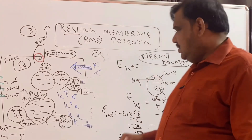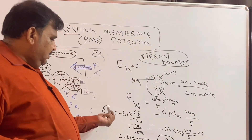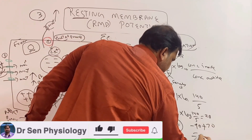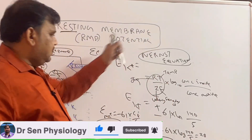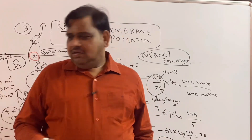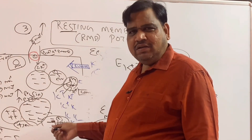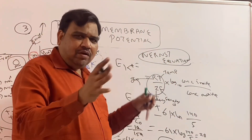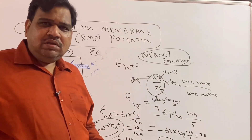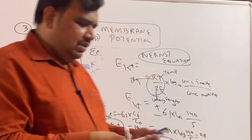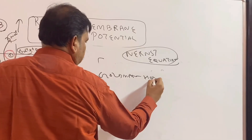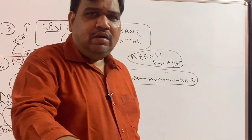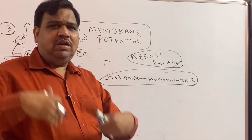Now comes a very important question. You might ask: if RMP equals the sum of sodium and potassium equilibrium potentials, then minus 90 plus 70 equals minus 20 — so I would expect RMP to be minus 20. But what we know is that the resting membrane potential of a neuron is minus 70. The reason is that potassium is much more permeable than sodium. So I cannot simply add sodium and potassium equilibrium potentials. I have to use a formula that includes the permeability of the cell membrane for each ion. Here comes another very important equation: the Goldman equation. The Nernst equation is for individual ions; the Goldman-Hodgkin-Katz equation includes all ions together and accounts for permeability to determine the actual RMP.